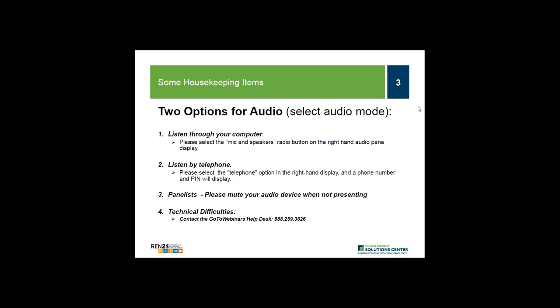For audio, you have two options: you may either listen through your computer or call in by telephone. If you choose to listen through your computer, please select the mic and speakers option in the audio pane, which will eliminate the possibility of feedback and echo. If you dial in by phone, select the telephone option and a box will display the telephone number and audio pin.